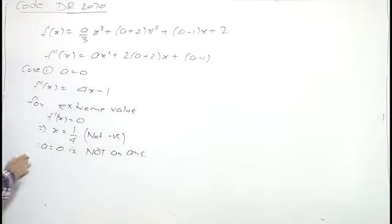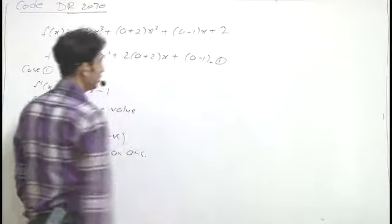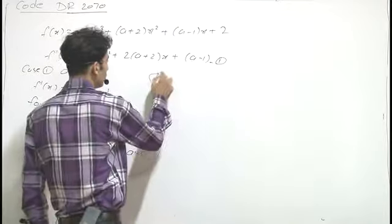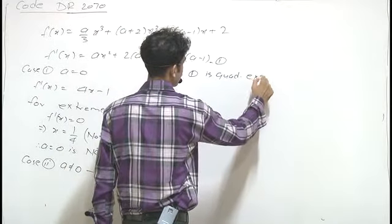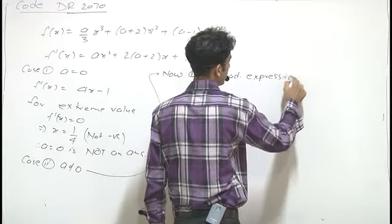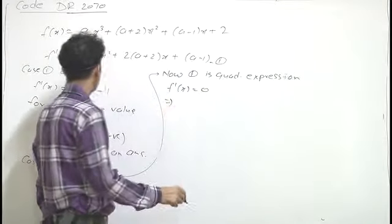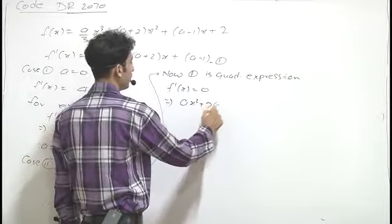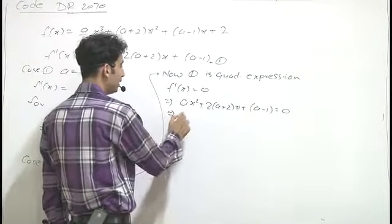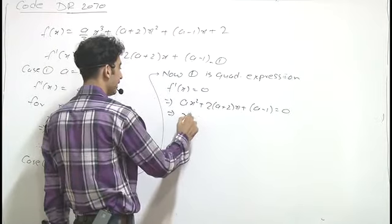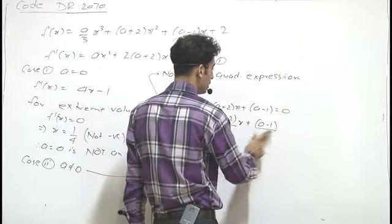Case 2: if a ≠ 0, then f'(x) is a quadratic expression. For extreme values, setting f'(x) = 0 gives ax² + (2a+2)x + (a-1) = 0. Since a ≠ 0, we can divide the whole equation by a, giving x² + (2a+2)/a · x + (a-1)/a = 0.